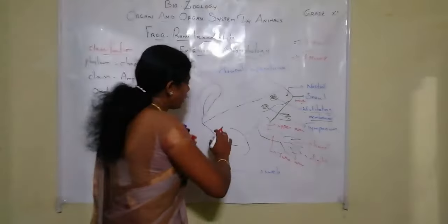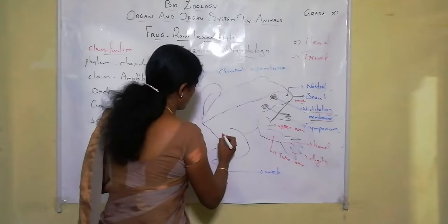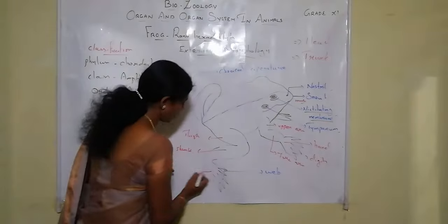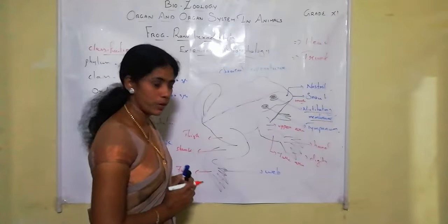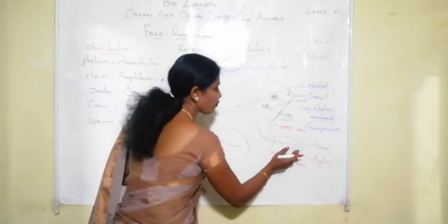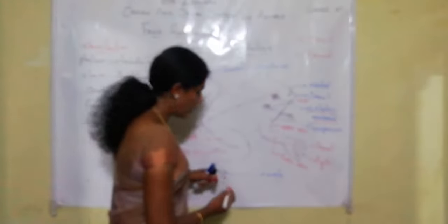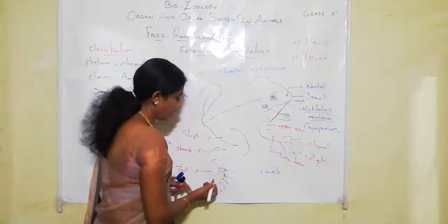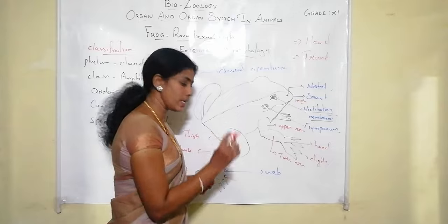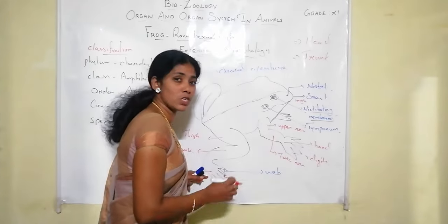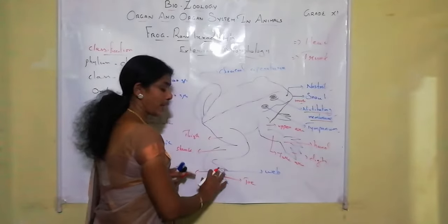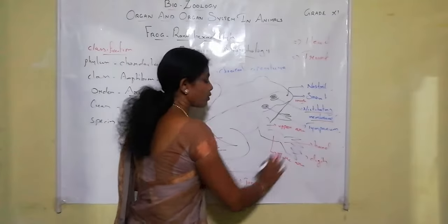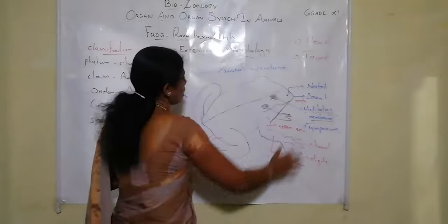The hind limb is also divided into three divisions: thigh, shank, and foot. The foot consists of five digits along with webs connecting each digit. There is also one additional spot considered as a sixth toe. So overall the hind limb has six toes and the forelimb has four digits, giving ten digits in total.